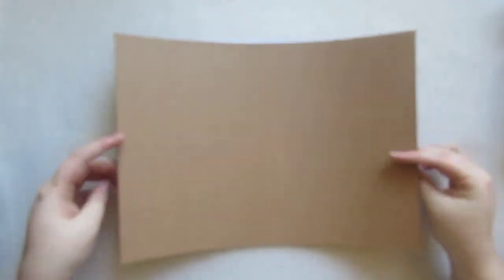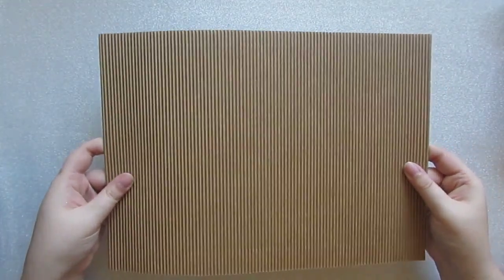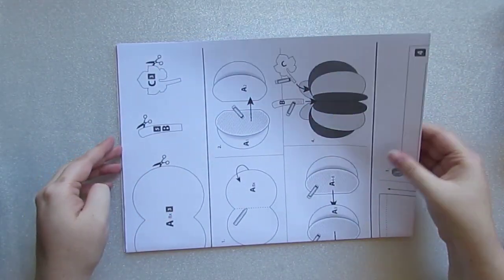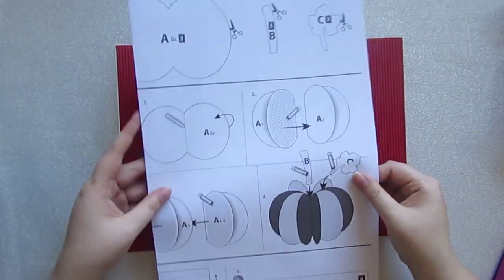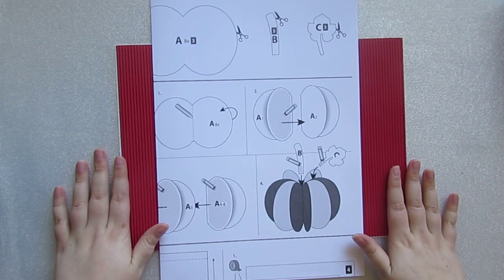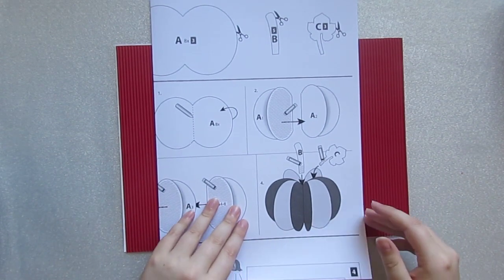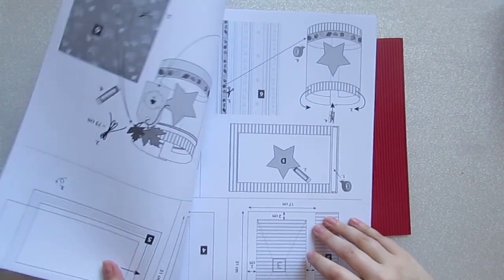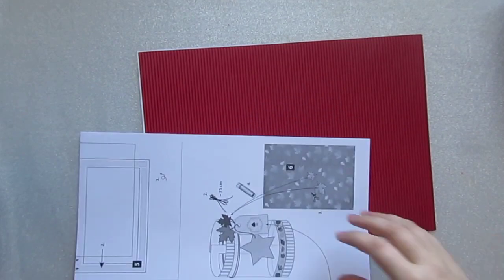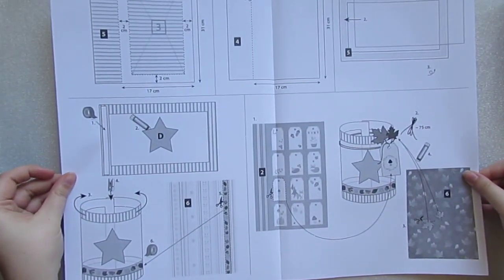Then you get corrugated cardboard. That'll be fun to make something out of. And then you actually get instructions and these show you how to make the little pumpkin on the front. Let me see if I can find it. So it shows you how to make the little pumpkin. It looks like it shows you how to make some other projects as well. That's quite handy if you're stuck for inspiration.